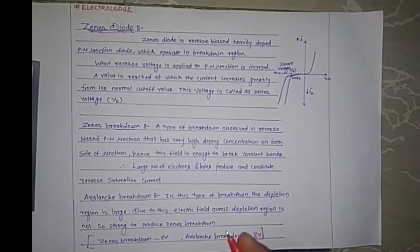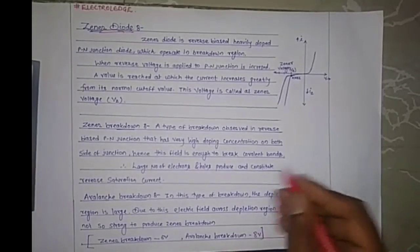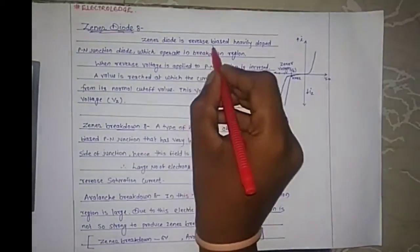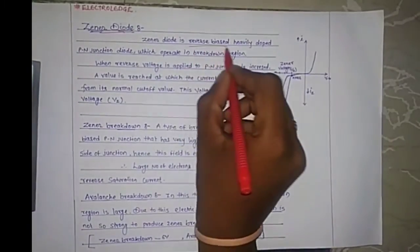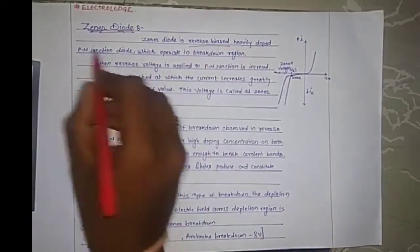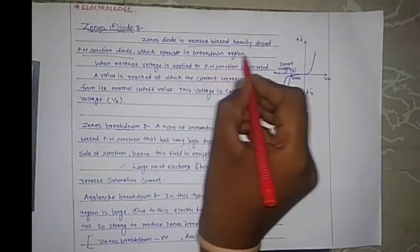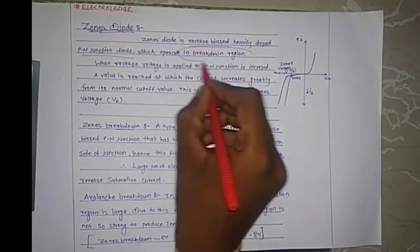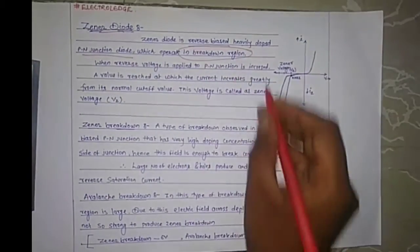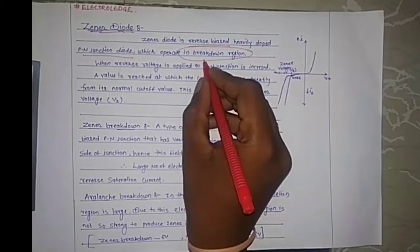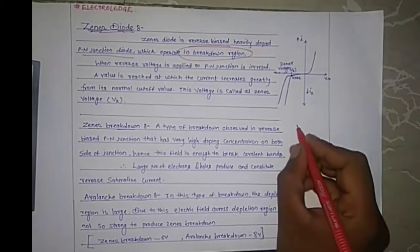So what is meant by Zener diode? A Zener diode is a reverse biased, heavily doped PN junction diode which operates in a breakdown region. Please note: it operates in a breakdown region.